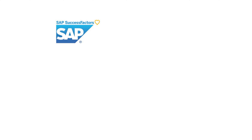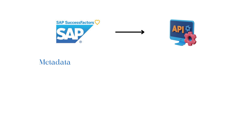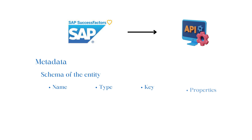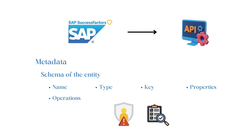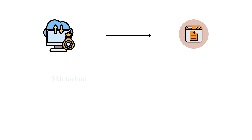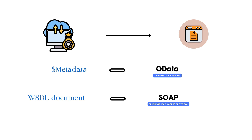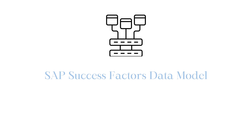When you try to call SAP SuccessFactors using an API, you need to provide the API definition, which specifies the metadata and schema of the entity such as its name, type, key, properties, and operations. The API definition also determines the authorization and validation rules for accessing and modifying the entity in SuccessFactors. For example, if you want to retrieve the metadata of the API definition, you can use $metadata token in OData Service or a WSDL document.